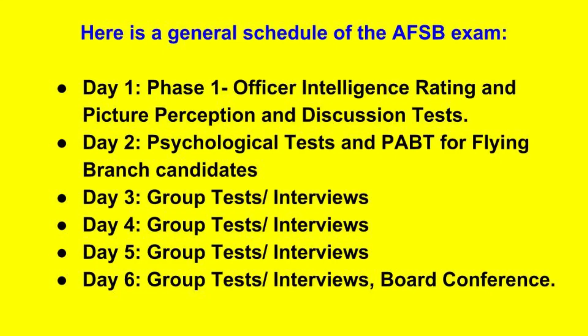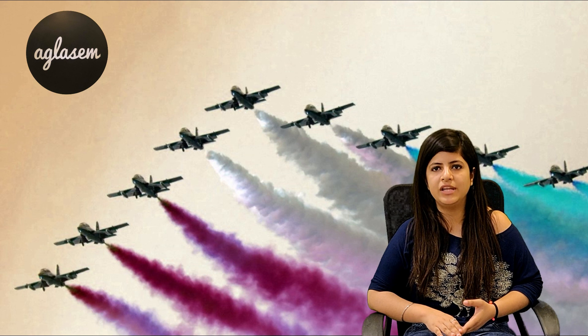AFSB, i.e. Air Force Selection Board: the board looks for officer-like qualities in candidates and selects them on the basis of several tests which go on for 5–7 days. The general schedule of the AFSB is on your screen. The result of AFSB 2018 will announce the list of candidates who have obtained marks more than the cut-off. Candidates shortlisted on the basis of the FCAT will be called for further testing at one of the Air Force Selection Boards. Candidates below the age of 25 must be unmarried at the time of commencement of the course.